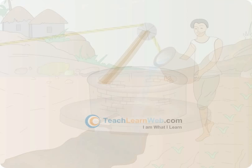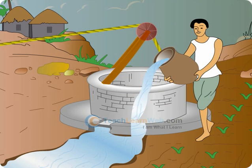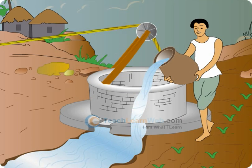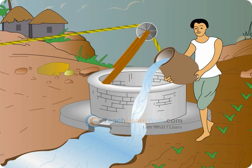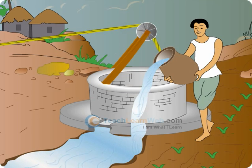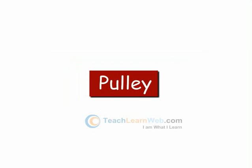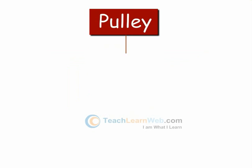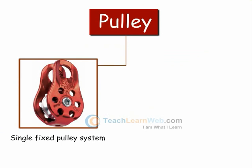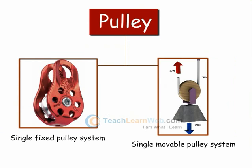Pulley: It is a flat circular disk having a groove in its edge, capable of rotating around a fixed point passing through the central axis called the axle. Pulleys can be of two types: a single fixed pulley system and a single movable pulley system.